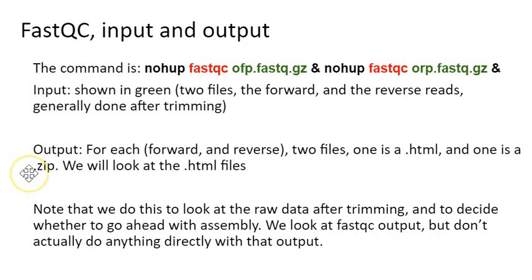So when you run fastqc on the command line, you use this command. It's a nice short simple command. So you run nohup, and then fastqc is calling the command, and then the ofp.fastq.gz is the input file, and nohup.fastqc and the orp.fastq.gz and ampersand is the reverse paired cleaned up data. So both these files came out of Trim-O-Matic and they're now the input file. If you wanted to run fastqc on a data set that hadn't been trimmed yet, you just would adjust the input data to suit.